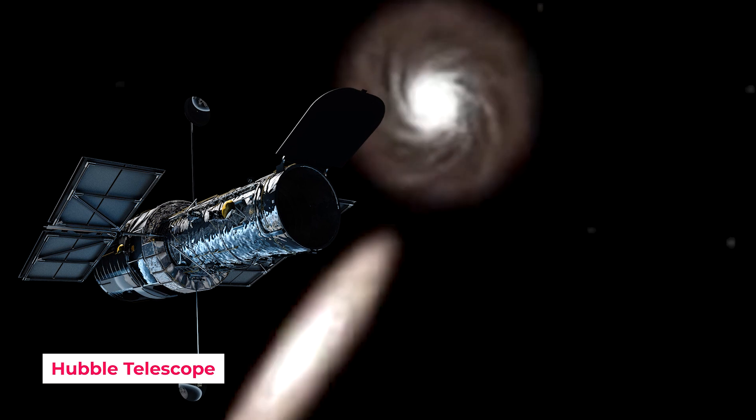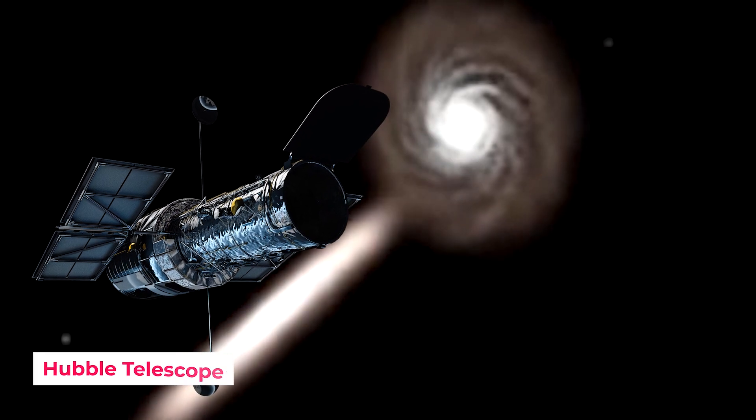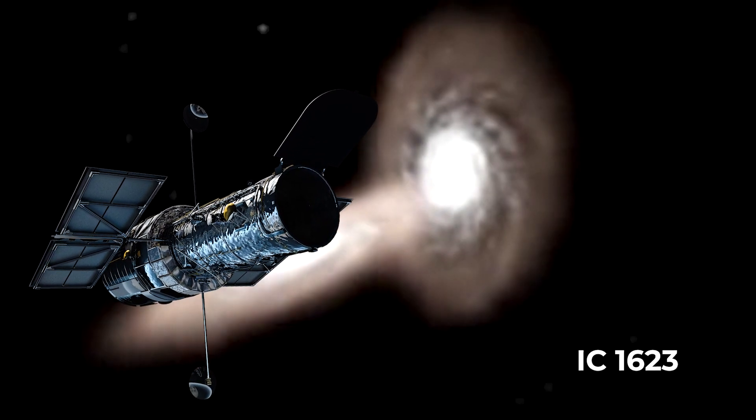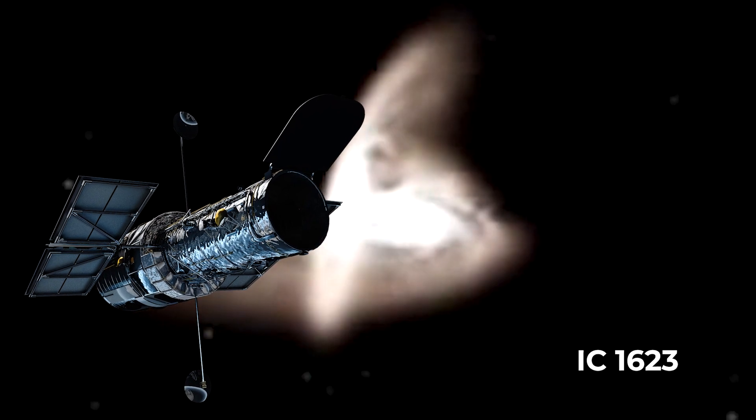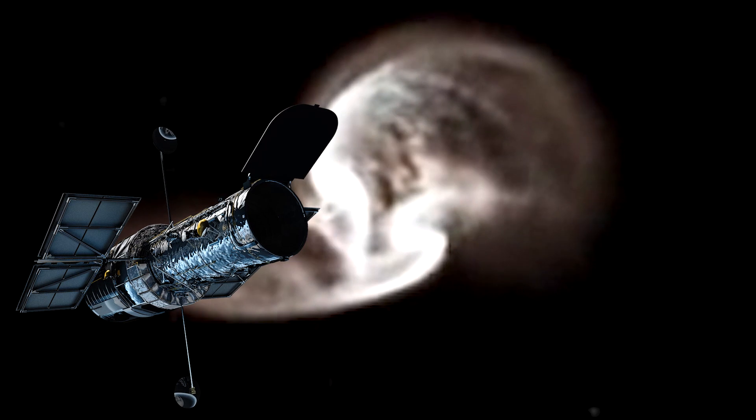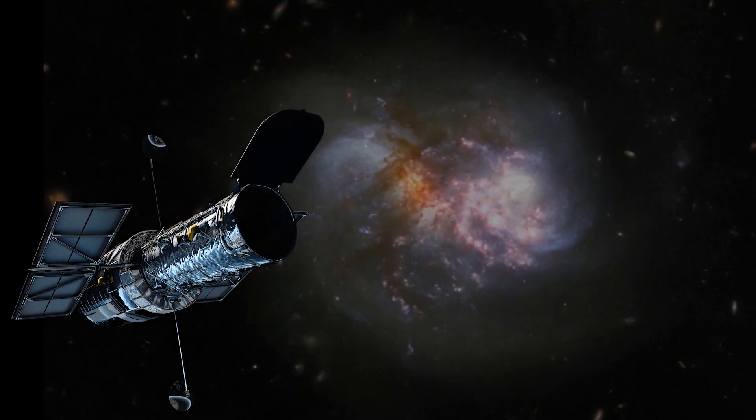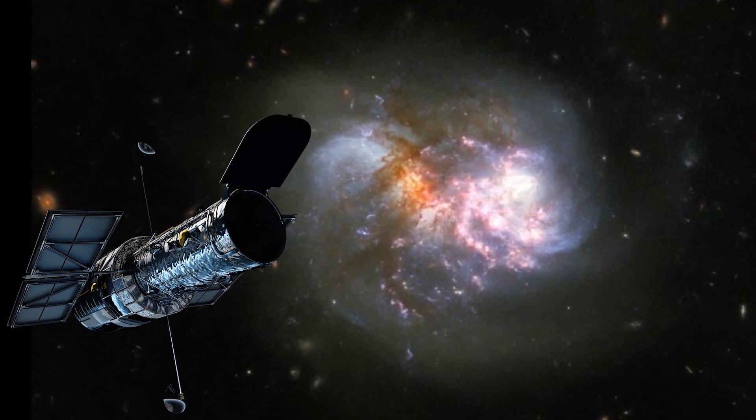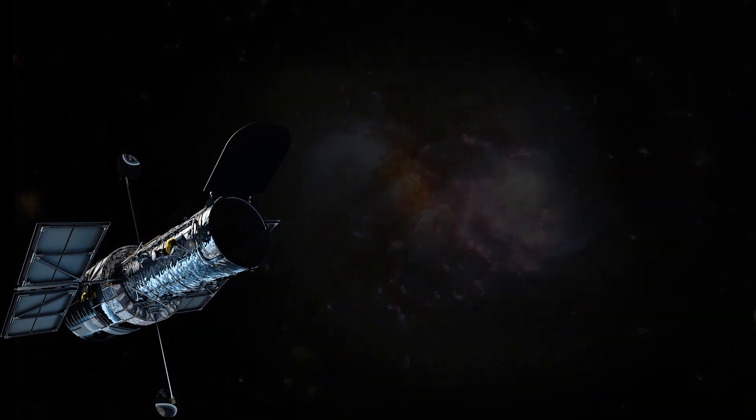While the Hubble Telescope was able to discover the collision of two galaxies named IC 1623, it wasn't able to see clearly through the thick layer of dust surrounding them. As it mostly relies on using visible light, this meant that anything hidden behind that space dust won't be visible from such a long distance.